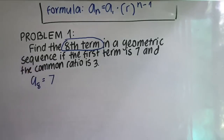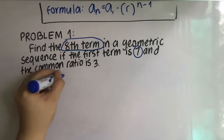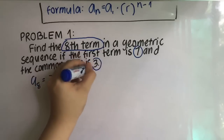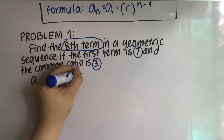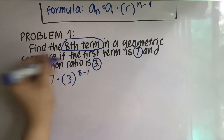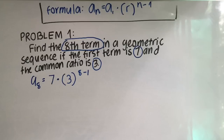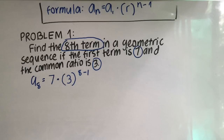Now that we have identified our given, we are going to plug it into our formula, which is a sub n is equal to a sub 1 multiplied by r raised to n minus 1. Once we plug it in, our equation will be: a sub 8 is equal to 7 multiplied by 3 raised to 8 minus 1.